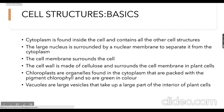Let's look at the cell structures. First, we have cytoplasm. Cytoplasm is found inside the cell — it's a jelly-like substance that contains all the other cellular structures. Within the cytoplasm we also have the large nucleus, which is surrounded by a nuclear membrane.